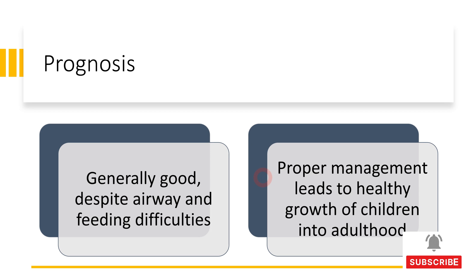In this video we covered everything about Peyer-Robin syndrome: the three main characteristic features used to diagnose the patient, etiology and pathogenesis, clinical features, how to diagnose and differentiate it from other syndromes, management of such patients, and prognosis. I hope this video was useful. If you liked it, please like, share, subscribe, and press the bell icon. Thank you for watching, see you next time.